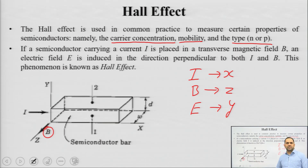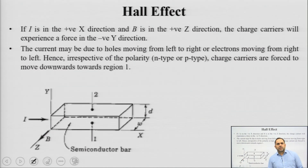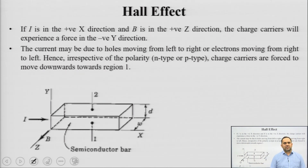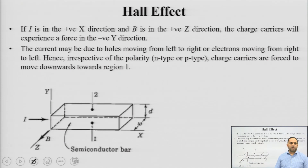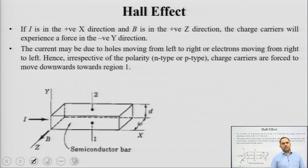So this is your circuit arrangement and this is the definition of Hall effect: a current-carrying semiconductor placed inside a magnetic field experiences a perpendicular electric field. If current is in the positive x direction and B is in the positive z direction, the charge carriers will experience a force in the negative y direction. This current can be because of both electrons as well as holes.